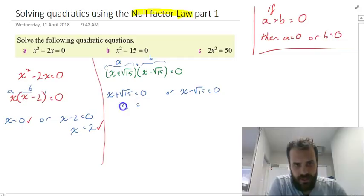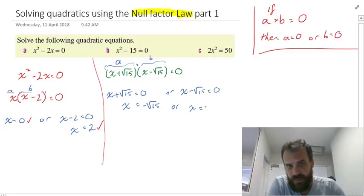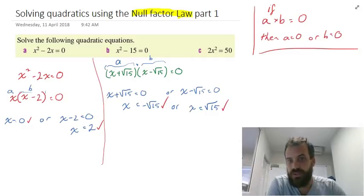That means x equals, the positive √15 comes over here and becomes -√15, or the negative √15 comes over here and becomes positive √15. So two answers: x = -√15 or x = √15.